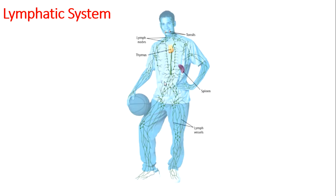The lymphatic system has three main functions: removing excess fluid around organs, producing white blood cells, and absorbing and transporting fats. The lymphatic system helps your body maintain fluid homeostasis. About 65 percent of the human body is water. Sometimes when water, wastes, and nutrients move between capillaries and organs, not all of the fluid is taken up, and fluid builds up around organs causing swelling. To prevent swelling, the lymphatic system removes that fluid.